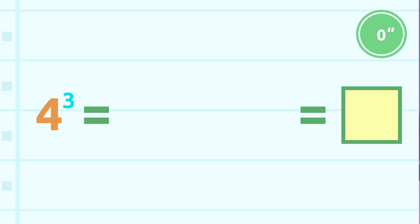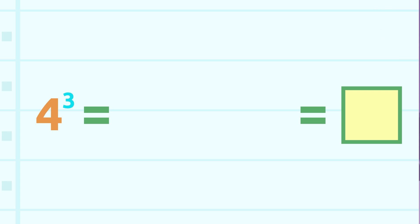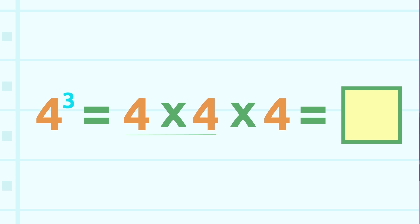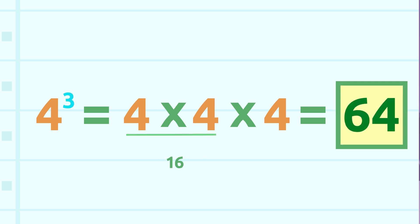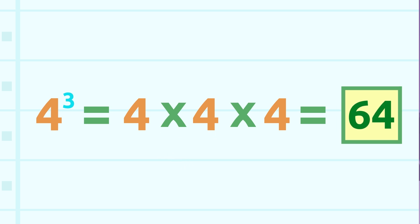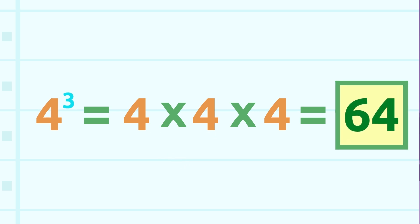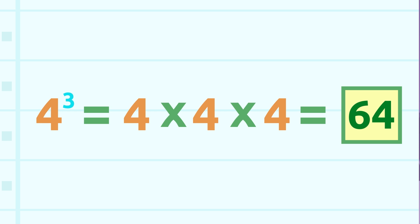Time's up! Do you have the answer? To calculate four to the power of three, we multiply four by itself three times. Four times four is sixteen, and sixteen times four is sixty-four. Four to the power of three is sixty-four. Well done, everyone!